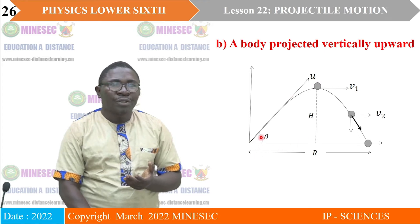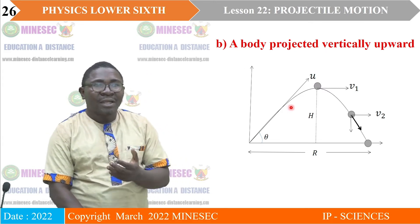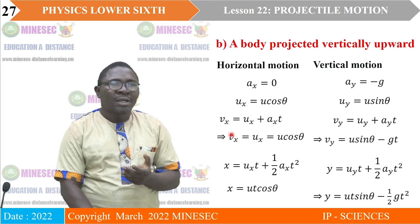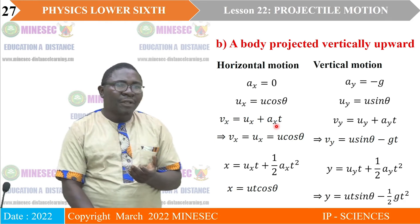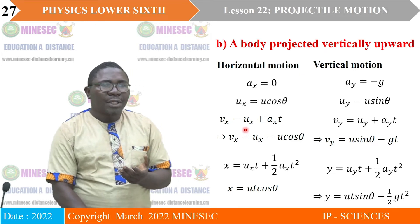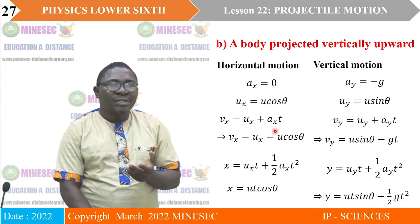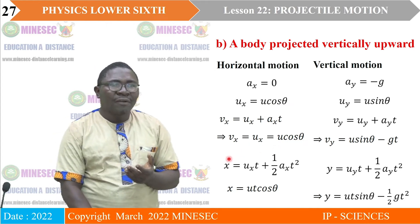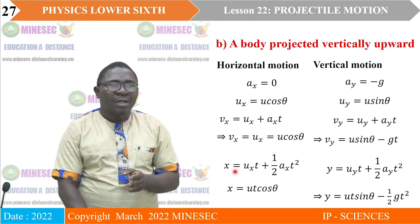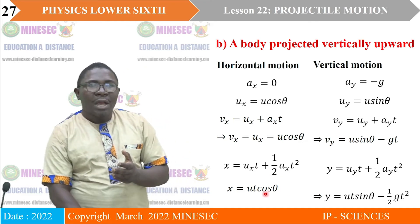Resolving the initial velocity, u acts like a hypotenuse in Pythagoras' theorem — which is why prerequisite knowledge of trigonometry is needed. The horizontal component is ux equals u·cos(theta). Since ax equals zero in the horizontal direction, the final horizontal velocity remains equal to u·cos(theta) throughout the motion. Substituting ax equals zero into the equation of motion, we obtain the horizontal velocity equation.